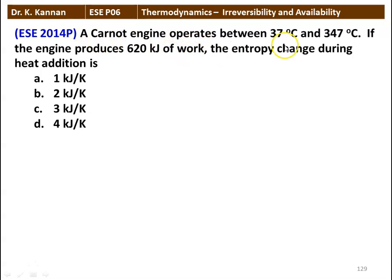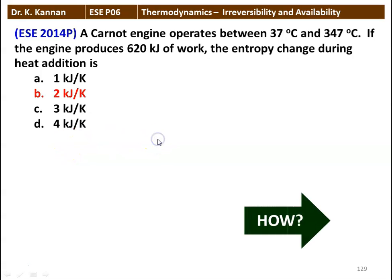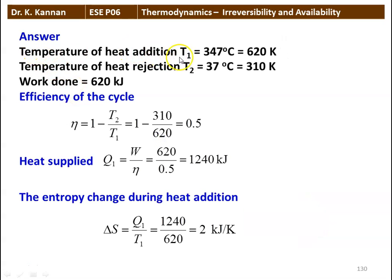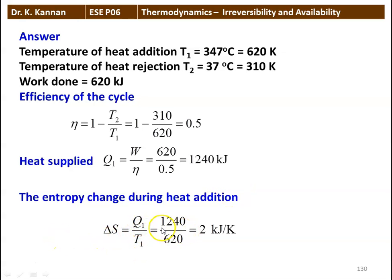Next question: a Carnot engine operates between 37°C and 347°C. If the engine produces 620 kilojoules of work, find the entropy change during the heat addition process. The answer is 2 kJ/K. T1 = 347°C = 620 K, T2 = 37°C = 310 K, W = 620 kJ. Efficiency η = 1 − T2/T1 = 1 − 310/620 = 0.5. Heat supplied Q1 = W/η = 620/0.5 = 1240 kJ. Entropy change ΔS = Q1/T1 = 1240/620 = 2 kJ/K.